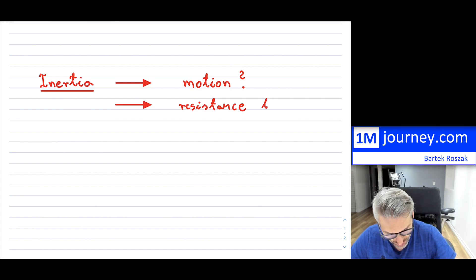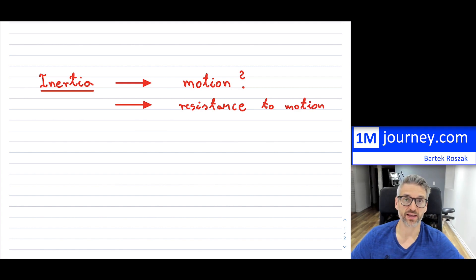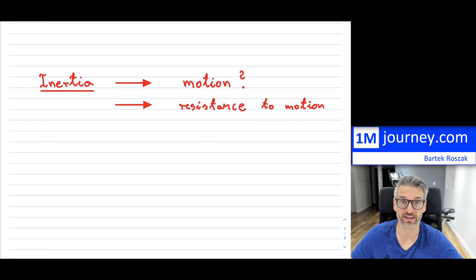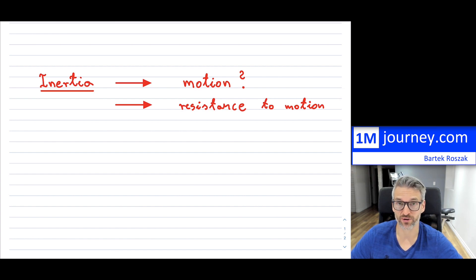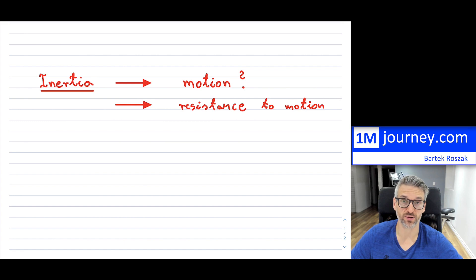Inertia is resistance to motion. How much resistance an object has depends on numerous features. One of the major features, easier to understand for students starting out, is the mass of the object — how much matter it has. If you have a very small object, it might be much easier for us to move it, so that object has very little inertia. If you have a very big, heavy object with a lot of mass, it will be much harder to move.